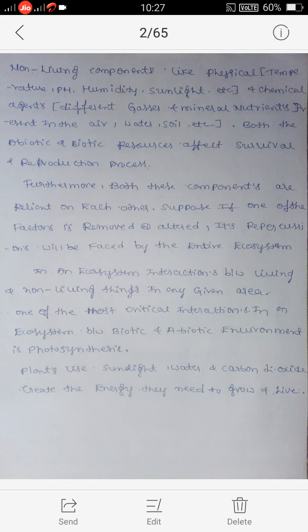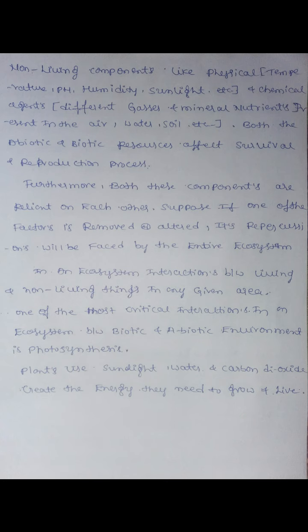So, plants use sunlight, water, and carbon dioxide to create the energy they need to grow and live. This is the basic information about the environment.